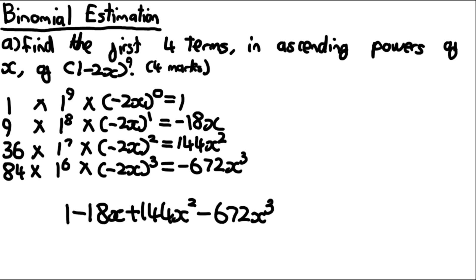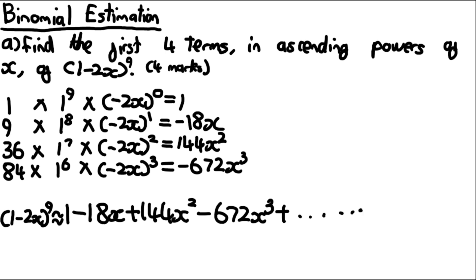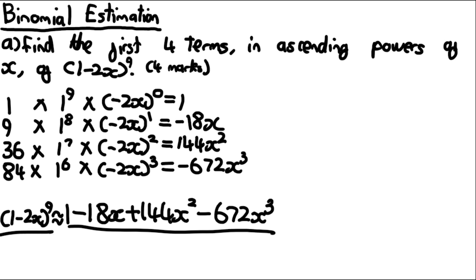So the expression is 1 − 18x + 144x² − 672x³. This is approximately equal to (1 − 2x)^9. It's not exactly equal — for that we would need all terms. Since we've only found the first four terms, it's approximately equal, but close enough to the actual value of (1 − 2x)^9.